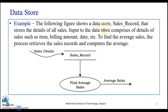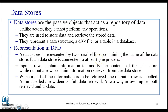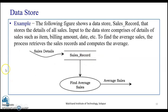The following figure shows a data store labeled 'sales record' that stores the details of all sales. The input to the data store comprises details of sales such as item, billing amount, date, etc. To find the average sale, the process retrieves the sales records and computes the average. The data store is represented by two horizontal parallel lines containing its name, and an arrow from the data store goes to the process 'find average sales', which computes the average sales directed to the next process.